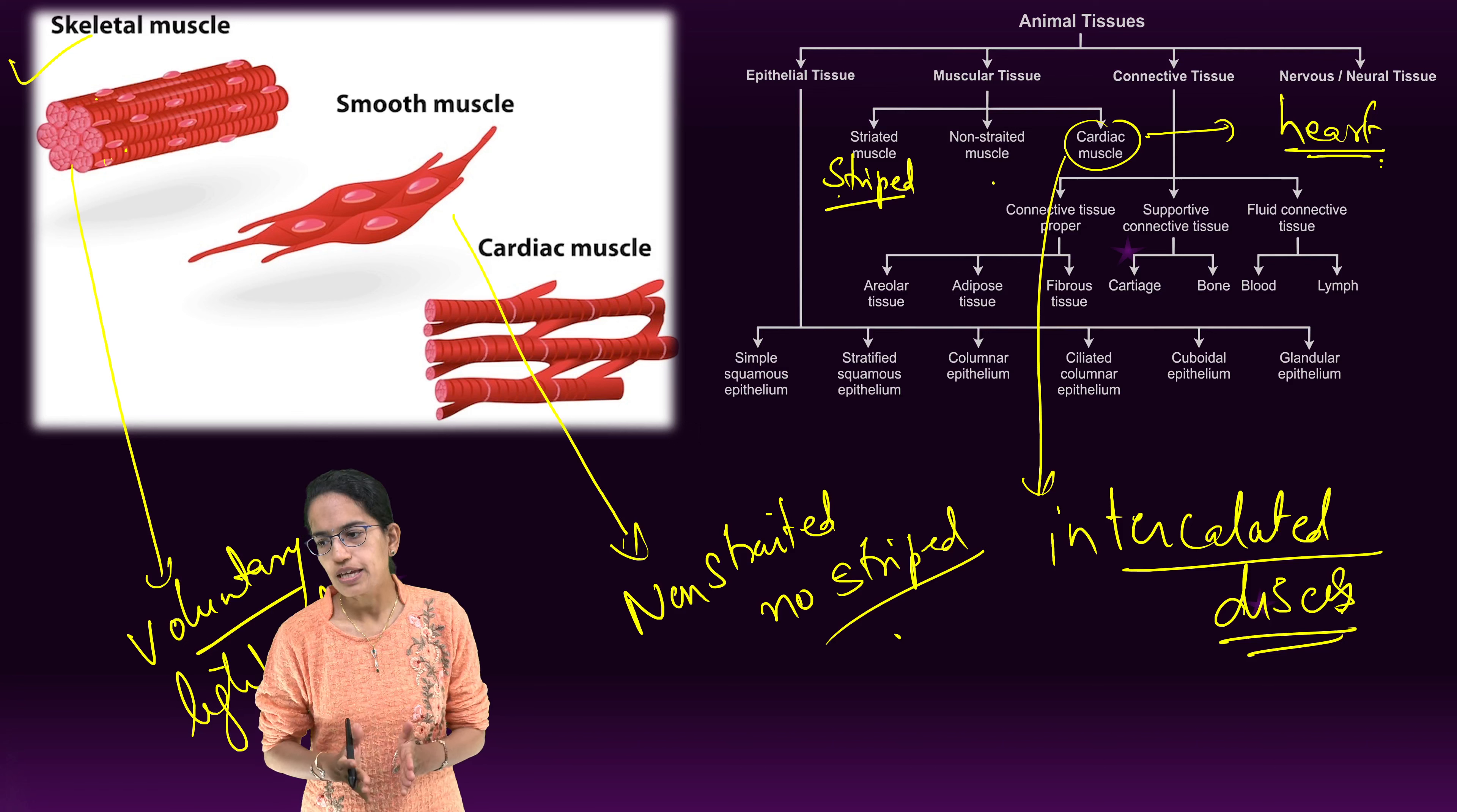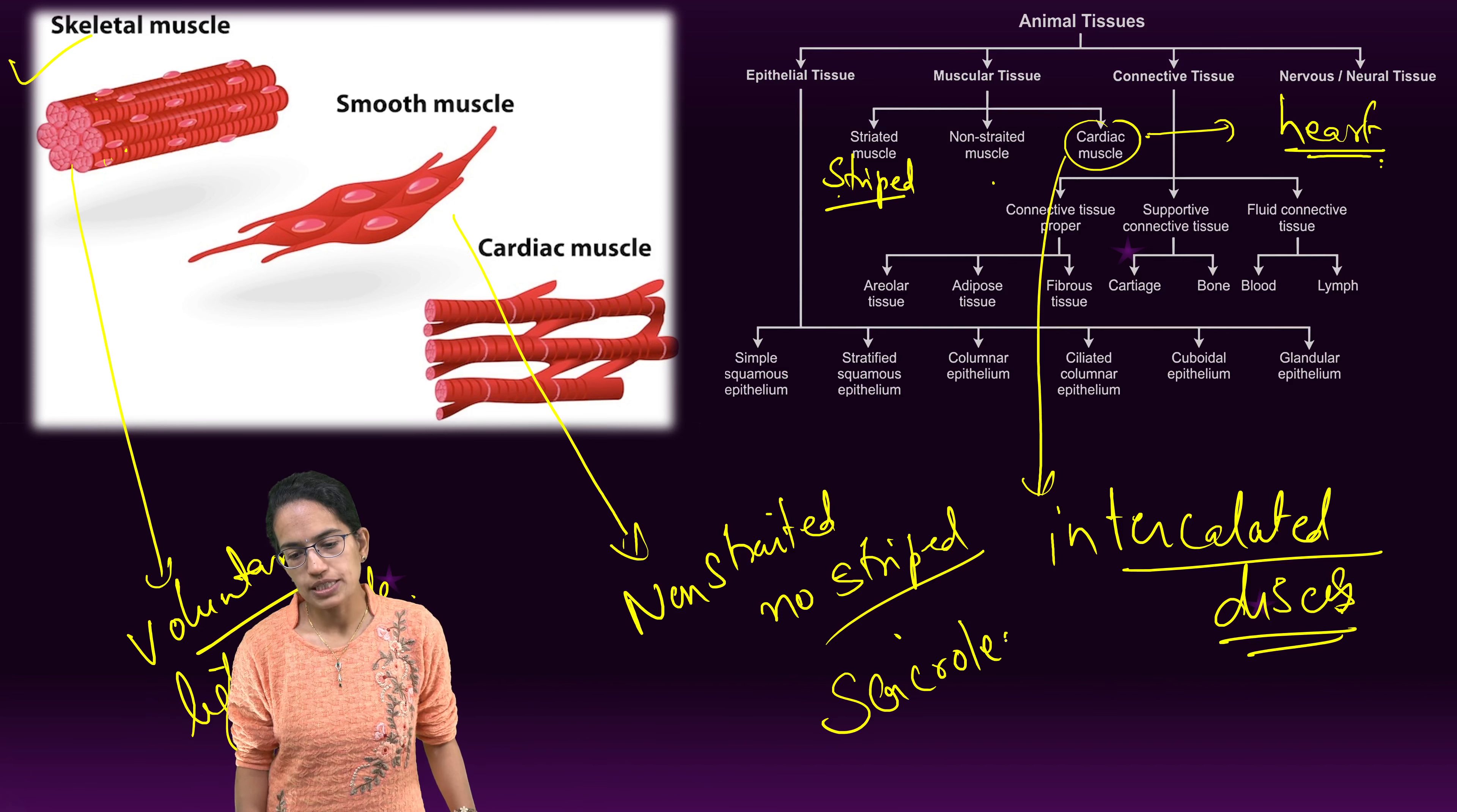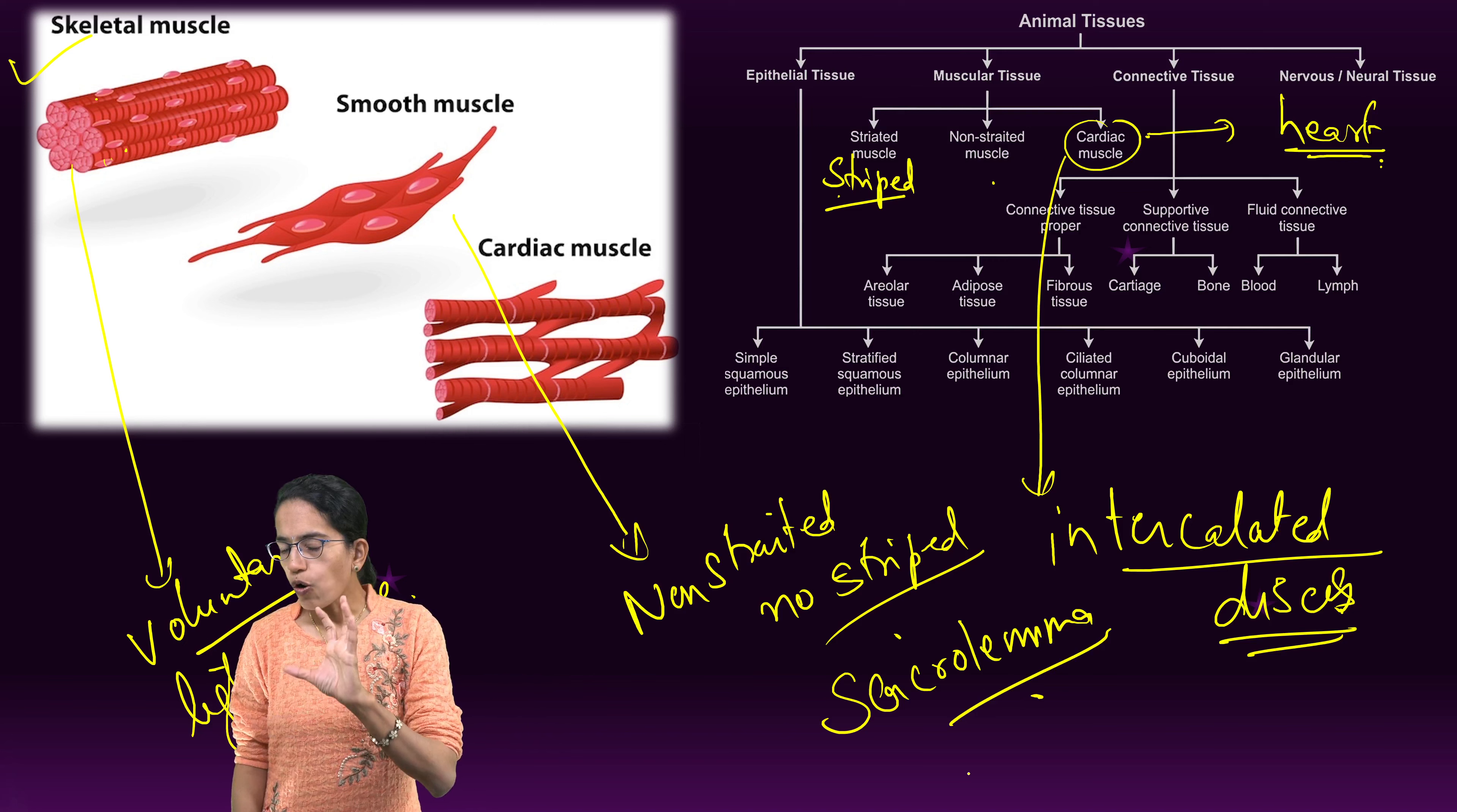One very important thing: in the case of smooth muscle, sarcolemma is absent, which is present in the case of skeletal muscle as well as cardiac muscle. Which of the three have an ability to remain contracted?